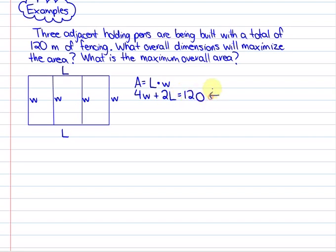What we are going to do now to create our quadratic function is isolate a variable. In this case I am going to decide to isolate the length because it will leave me with no fractions. So let's go ahead and do that. We have that two lengths is equal to 120 minus four widths. So a length is equal to 60 minus two widths.